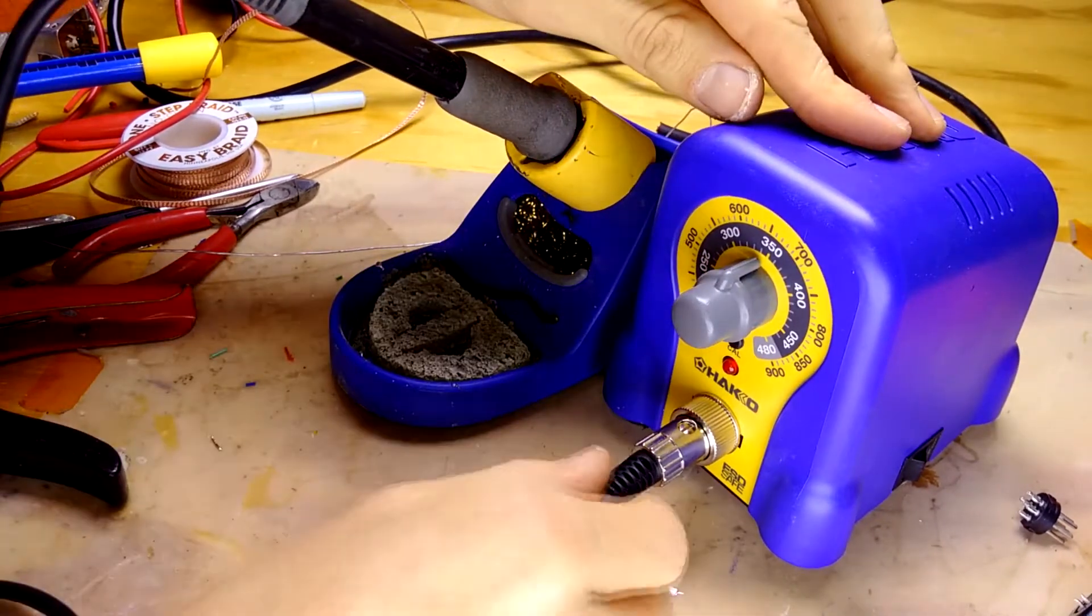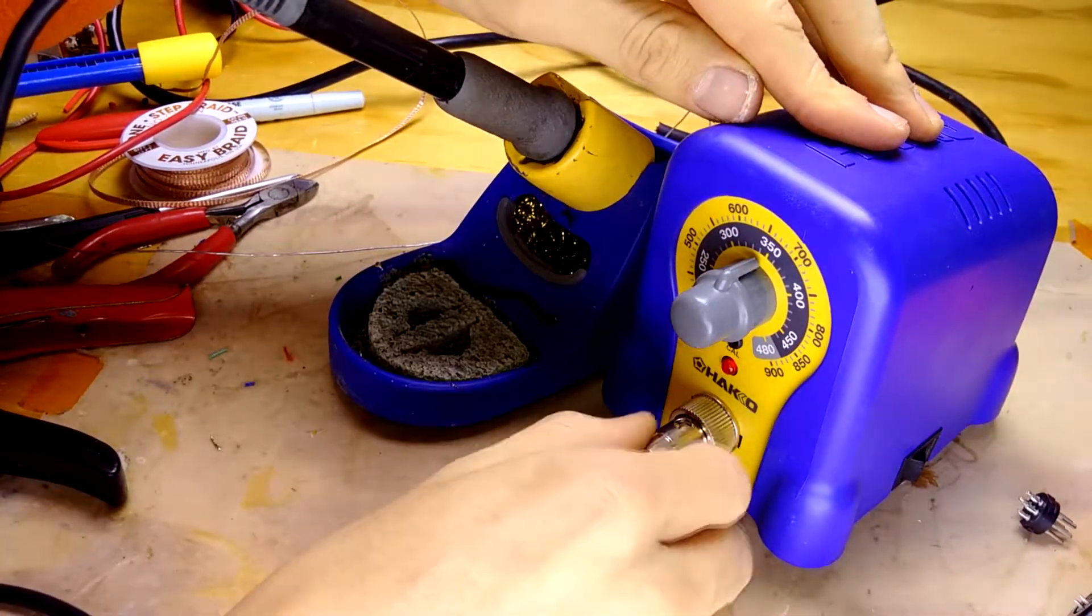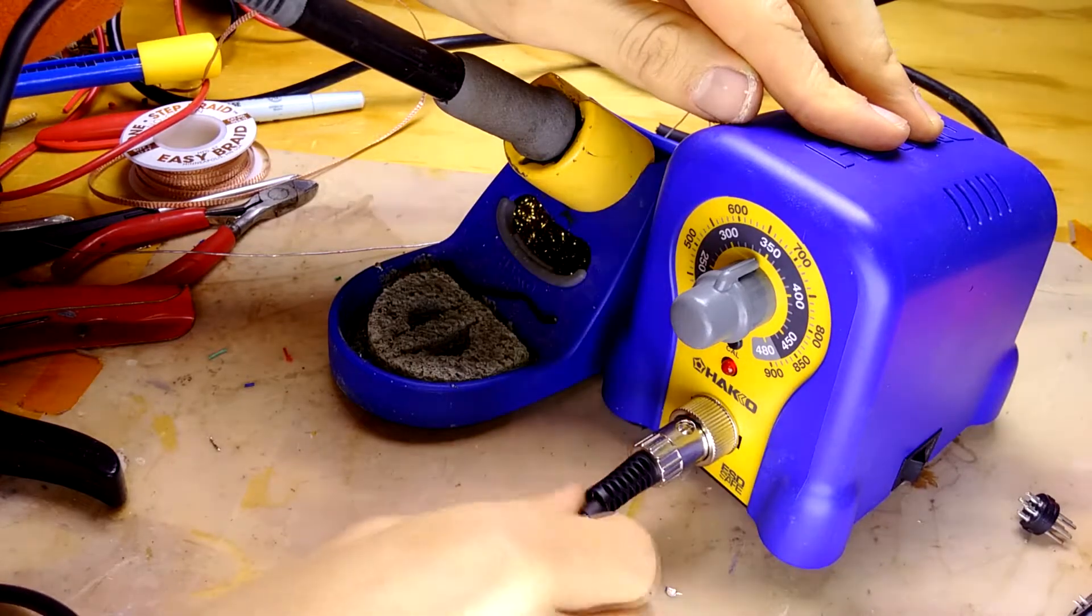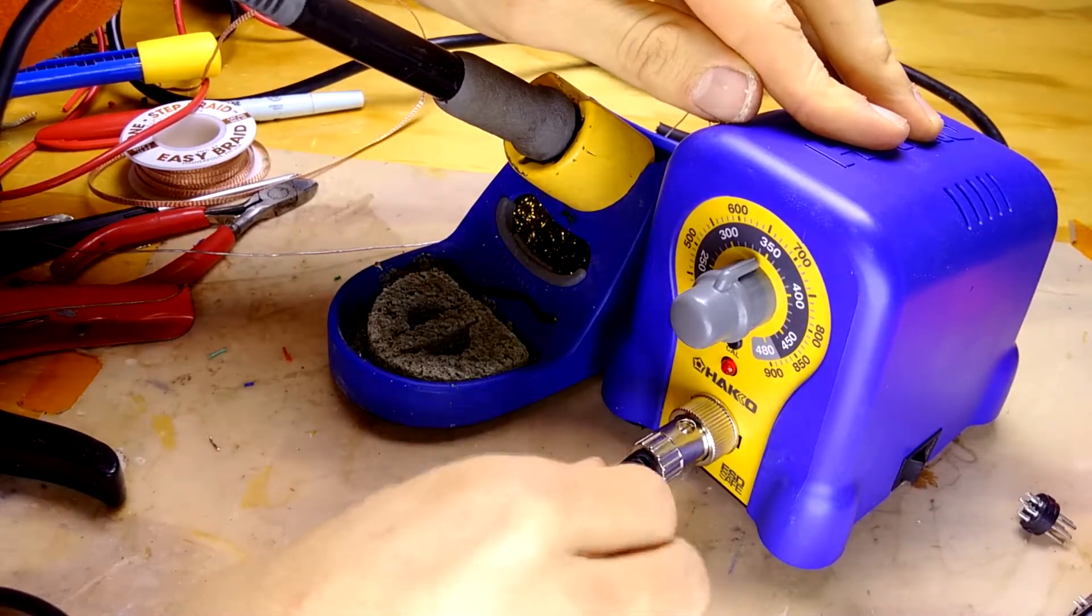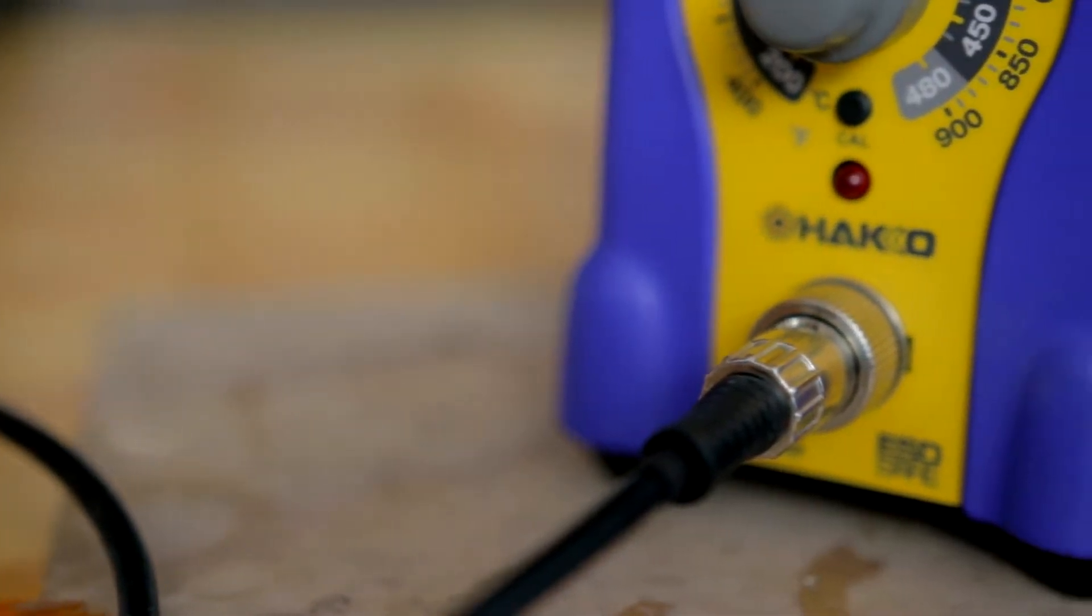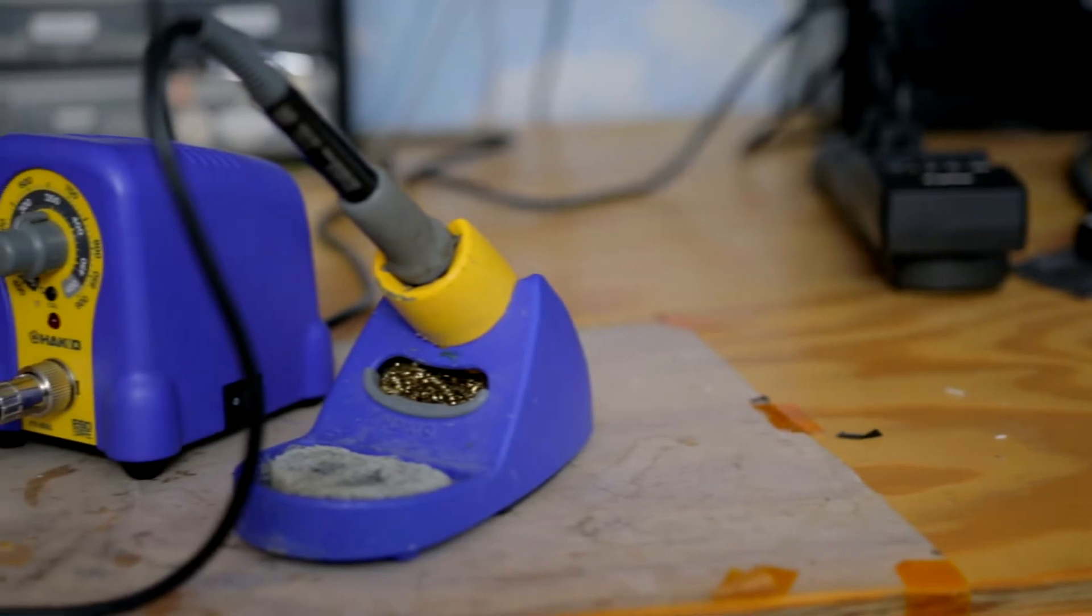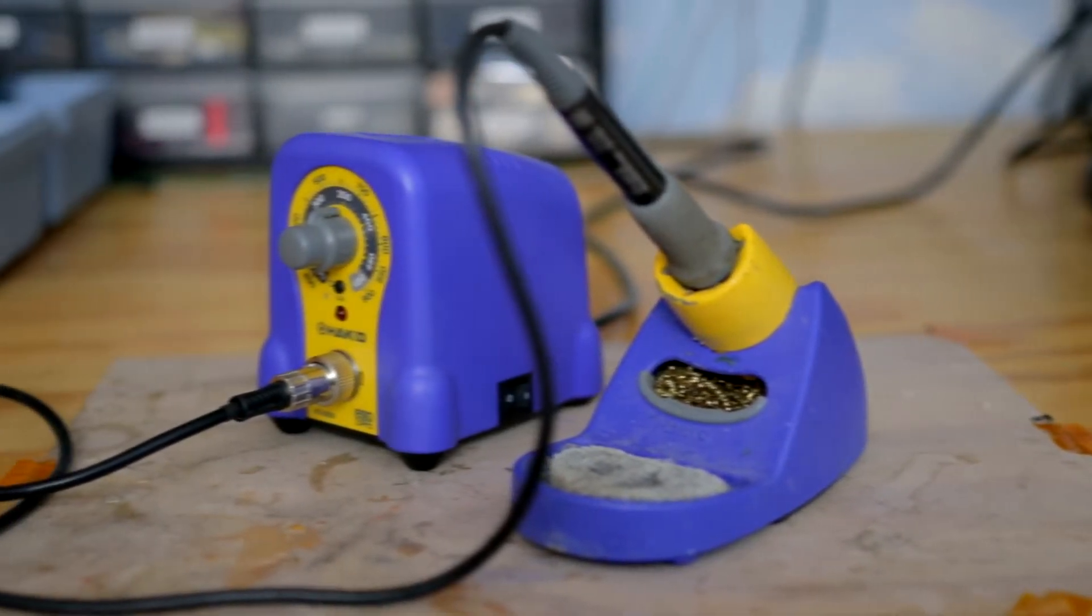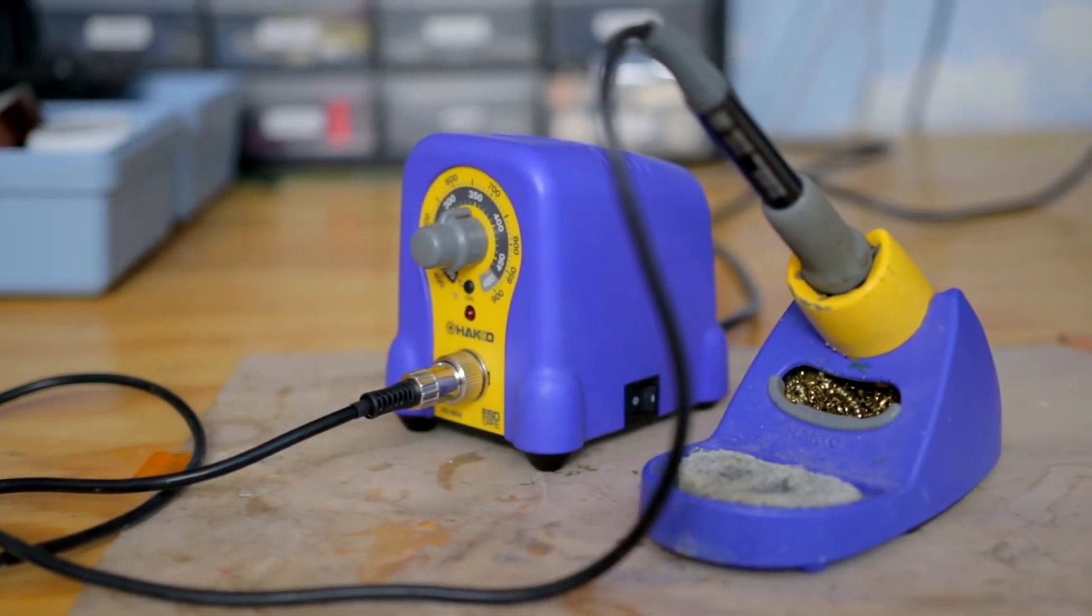So that completes this video. I hope that this will help when replacing a broken or intermittent connector on the Hakko 888 soldering iron. Links will be in the description for the connectors used in this video. Also, I will post a wiring diagram to my website, also in the description.